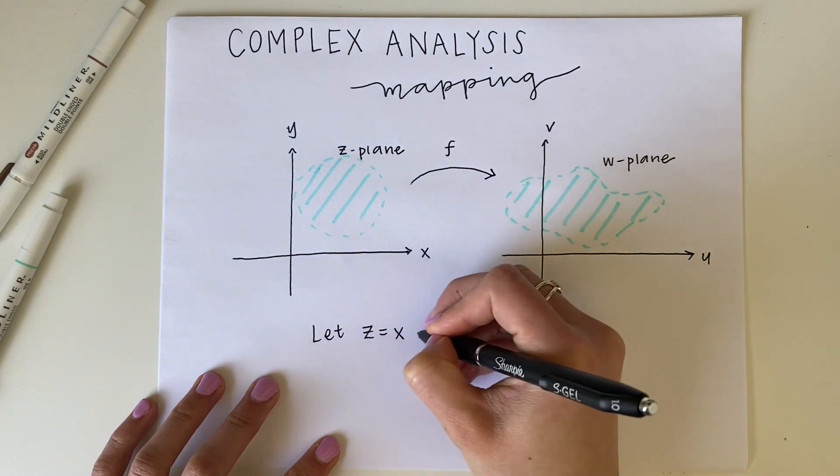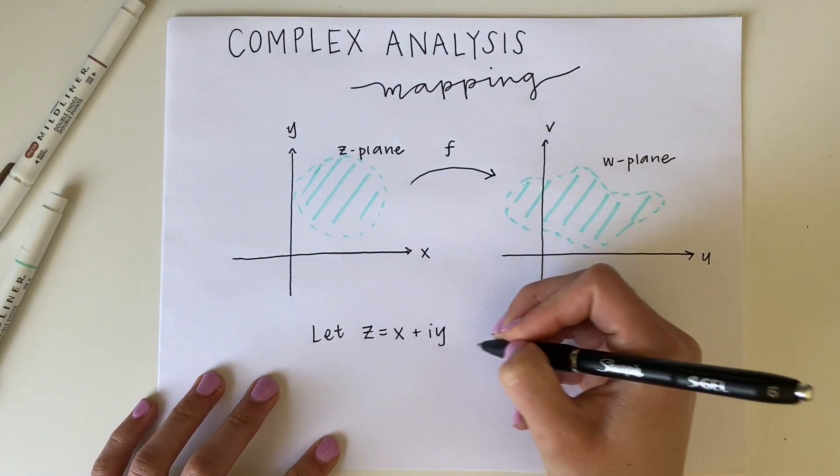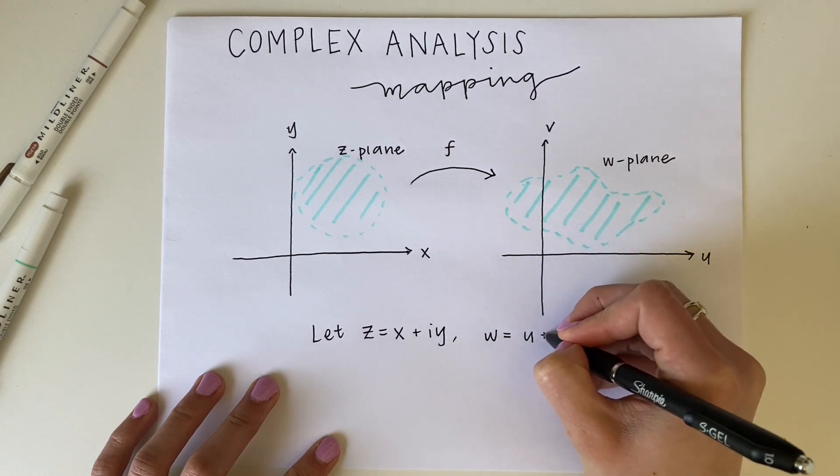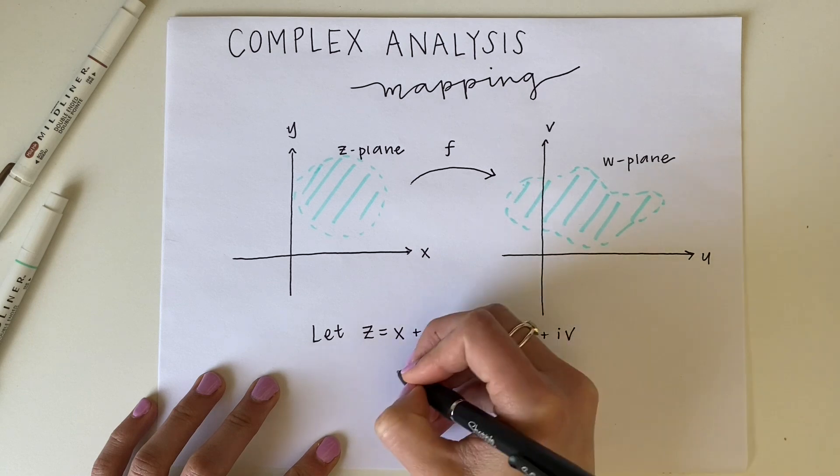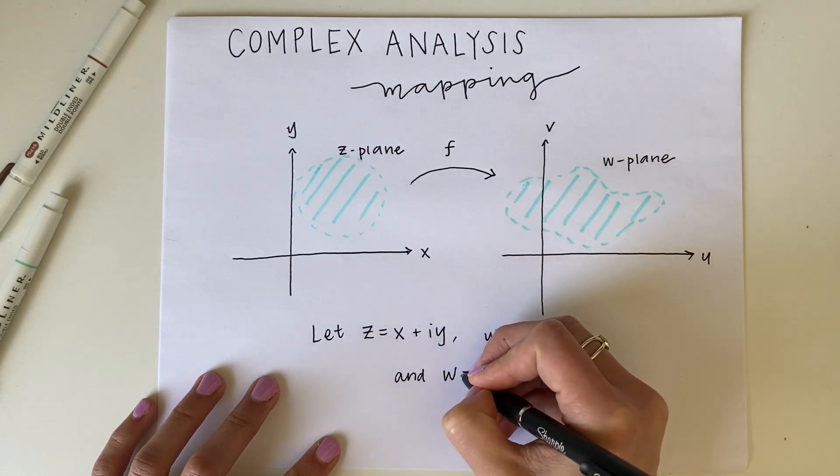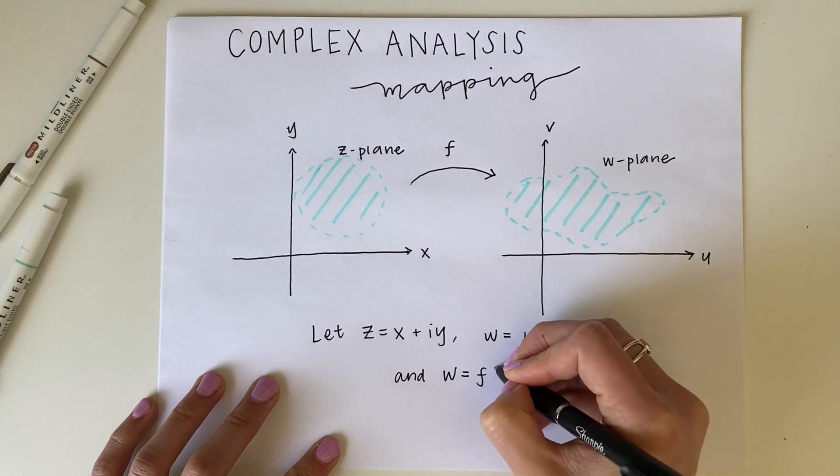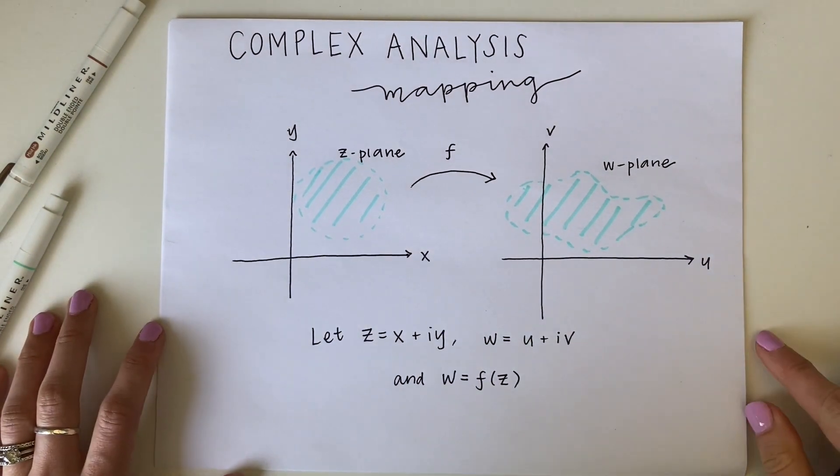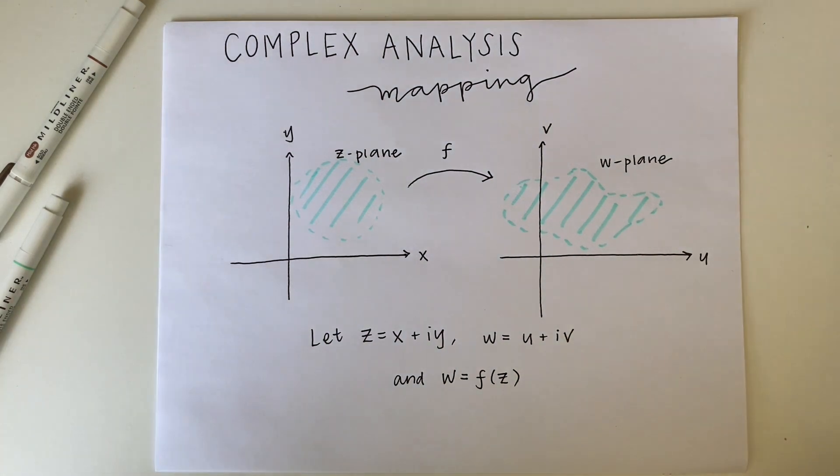Now for the terminology, we let z equal x plus iy, so that's our complex number. w is u plus iv, which is the transformation of z by the function f. For every point x, y in the z-plane, the relation w equals f of z defines a corresponding point uv in the w-plane.